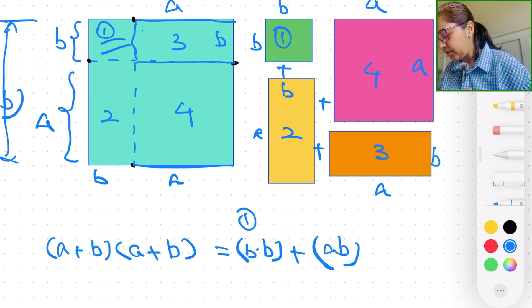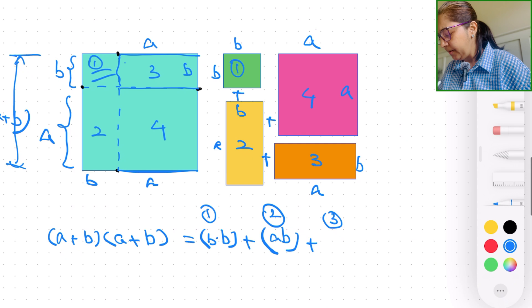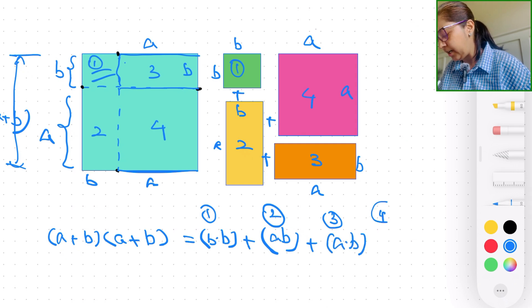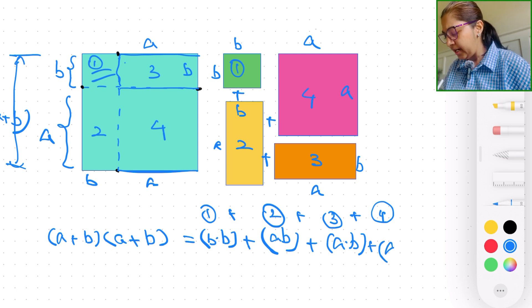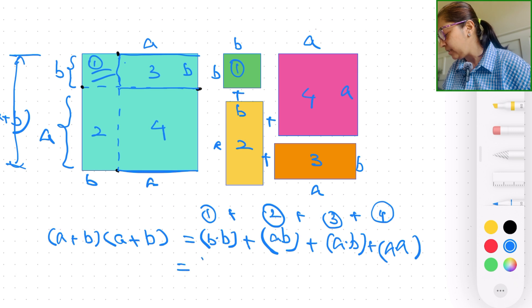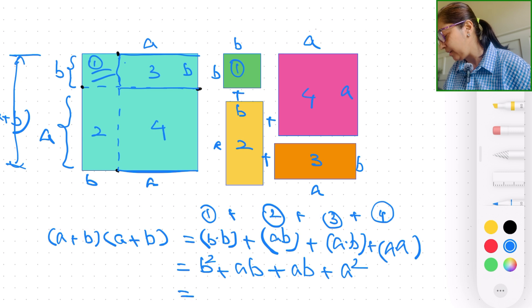which is 2. Area of the third one is going to be a times b again. And area of the fourth one. Now again, we are adding the areas of all the four different smaller shapes. The area of the fourth shape is going to be a times a, which results in b squared plus ab plus ab plus a squared, which is nothing but a squared plus 2 times ab plus b squared.